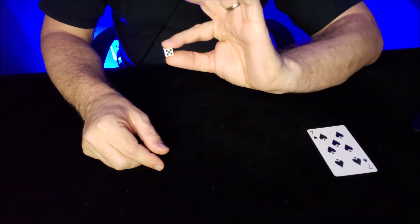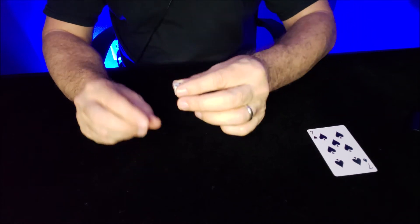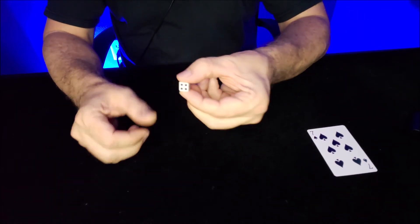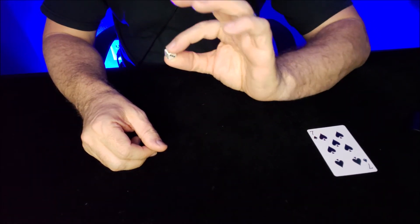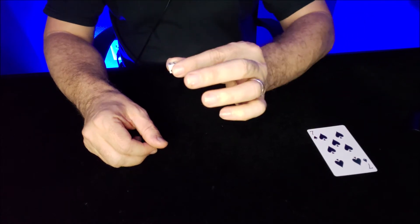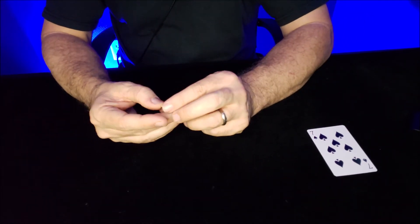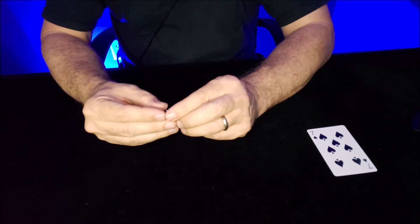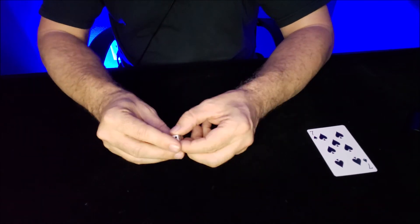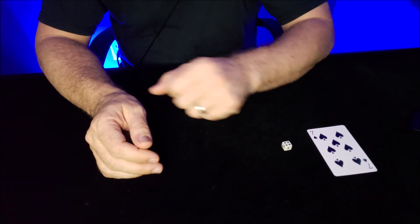Two plus five is seven. If they roll a four, four plus three is seven. So no matter what, no matter what they roll, they are gonna hit a seven every single time. You don't need...